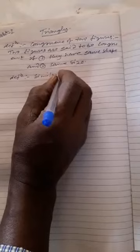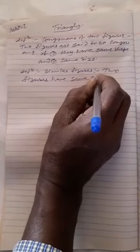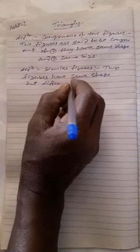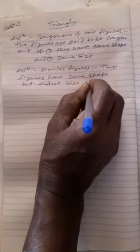Definition: Similar figures. Two figures have same shape but different size are known as similar figures.